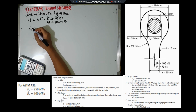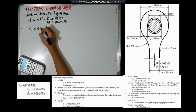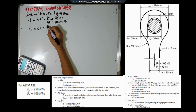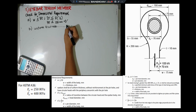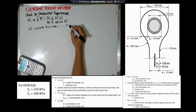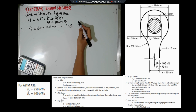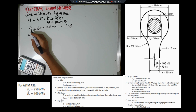The next requirement: the I-bar shall be of uniform thickness without reinforcement of the pinholes, and have circular heads with the periphery concentric with the pinhole. The member has uniform thickness and it has a circular head with the periphery concentric with the pinhole. This requirement is satisfied.